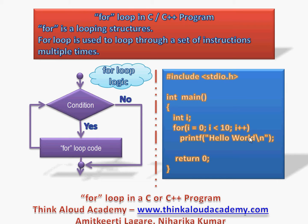It goes and prints hello world again, then goes up, increments the value of i, and checks whether i is less than 10. This process keeps repeating till the value of i is less than 10. As soon as i goes greater than 10, the for loop is exited. The condition we refer to is i less than 10 — till this condition holds, the print statement executes. Note that the increment operator i++ is implicit in the flowchart; after the body executes, i++ happens and the condition is rechecked.